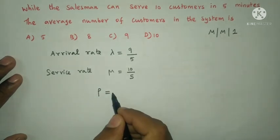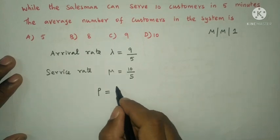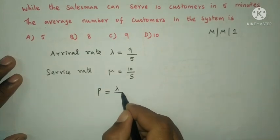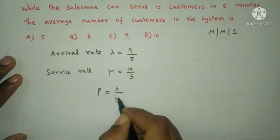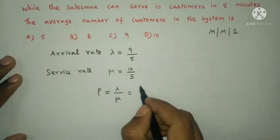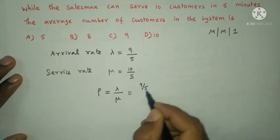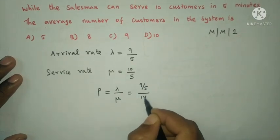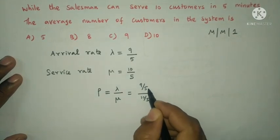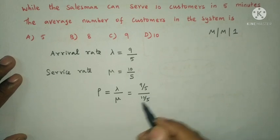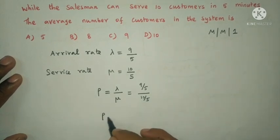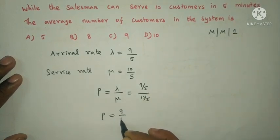Rho is the utilization parameter or busy period. Rho equal to lambda by mu. That is equal to (9 by 5) divided by (10 by 5). The 5s cancel, so rho equal to 9 by 10.